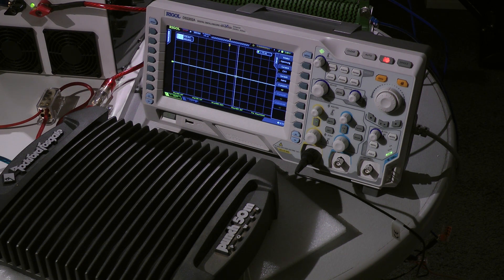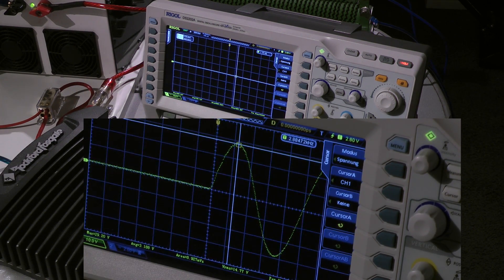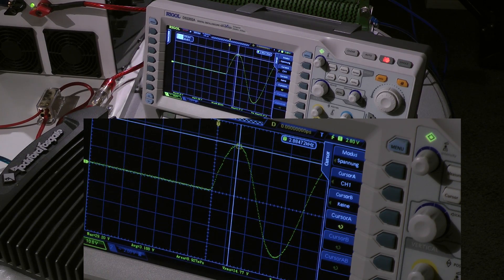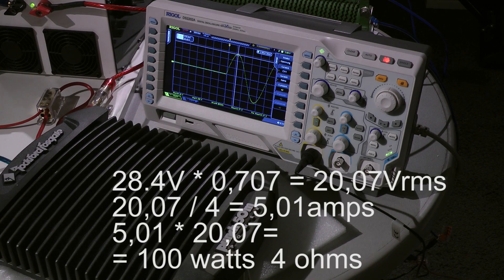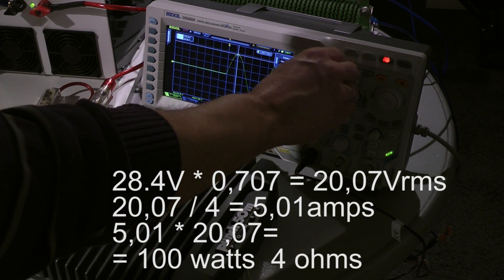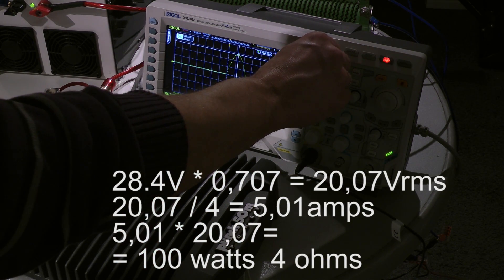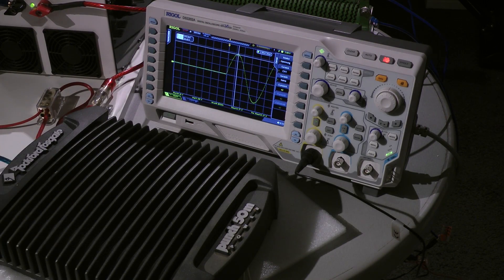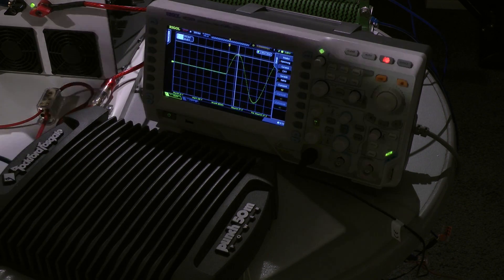First test is 4 ohms mono. This amp is, as I said, just a mono amp. A closer view to the signal we measured and there is no clipping. We have a maximum voltage of 28.4 volts. On the 4 ohm mono load the amp is doing a little more than 100 watts.